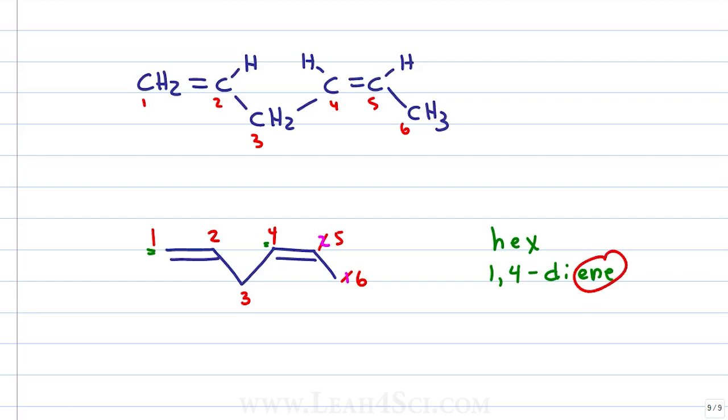Again we have ene for the pi bonds, di because I have to specify 2 and then 1 and 4 tells me where the pi bonds begin on the molecule and that's it.